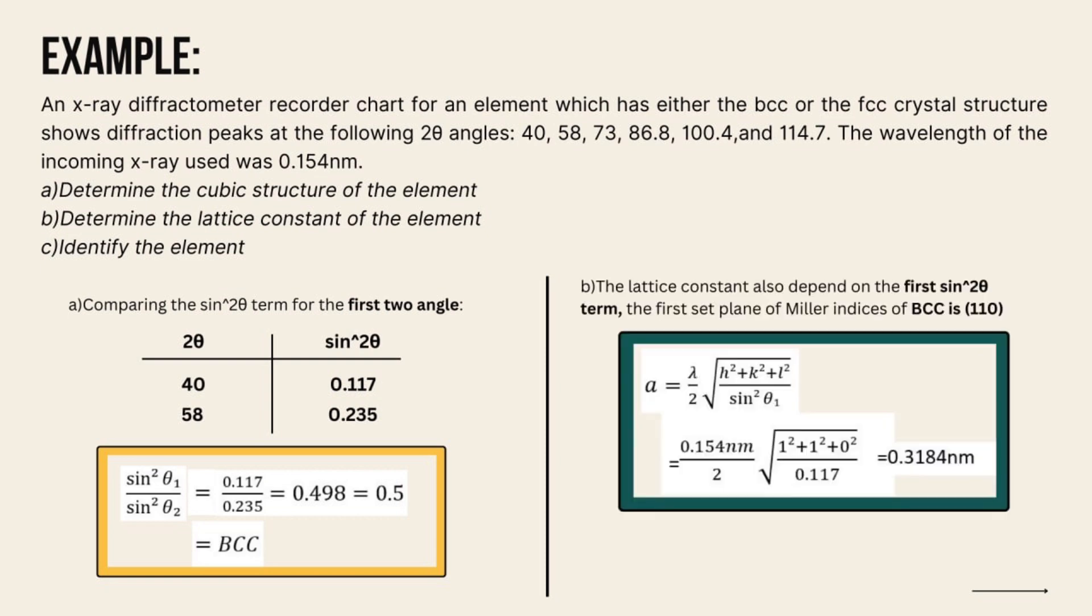To determine the lattice constant, we need to use the lattice formula as shown in the slide. From the lattice constant value, we can determine the element. For this example, the lattice constant we obtain is 0.3184 nanometers, which is the aluminum lattice constant.